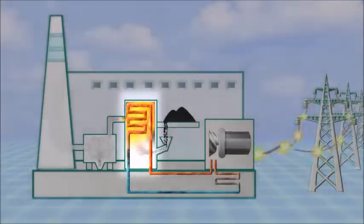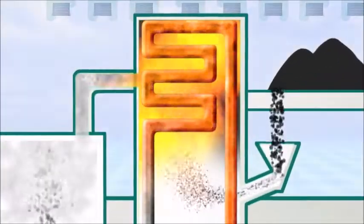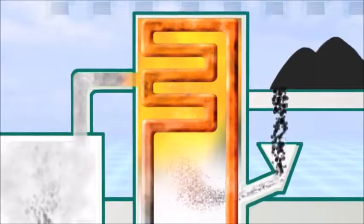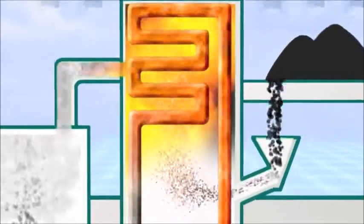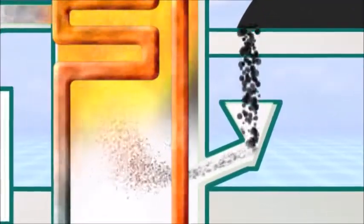The process starts with the boiler, which is a furnace where combustion takes place. Pulverized coal is injected with a stream of air into the furnace in a continuous process through a device known as a burner.